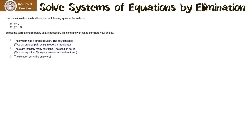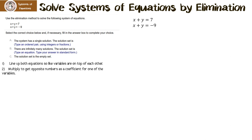Use the elimination method to solve the following system of equations. The first thing we have to do is line them up so x's are on top of each other and y's are on top of each other — and we're lucky because that already happened. I notice I have 1x and 1x. I could multiply one by negative 1 to get 0x, or do the same for the y's. I decided to solve for x, so I'm going to multiply the second equation by negative 1.